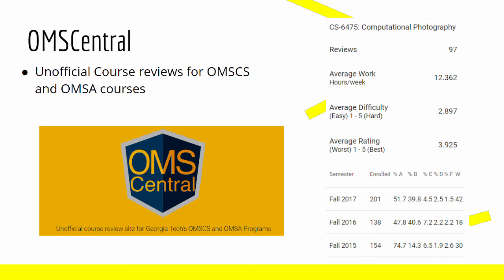If you have any additional questions on this course, remember to check out the OMS Central page. As I've said before, this is an unofficial course reviewing website created by a Georgia Tech grad. For computational photography, last time I checked, there were 97 reviews with an average work hour of 12 hours — which is very accurate to what I had said — an average difficulty of about 3, and an average rating of about 4, which is very high. Below, you can see even some of the average grades of who got an A, who got a B, and who got a C. I'm not sure how accurate this was for my course, as I was in 2019 and I don't even see data for 2018, but maybe they'll add this soon. Links to OMS Central will be in the description below.